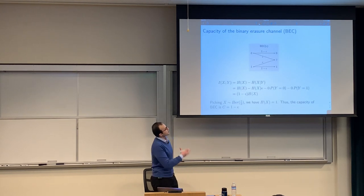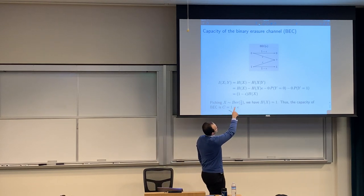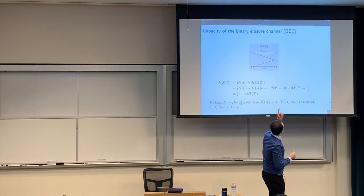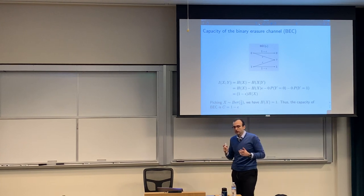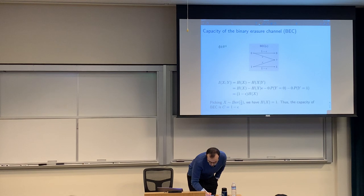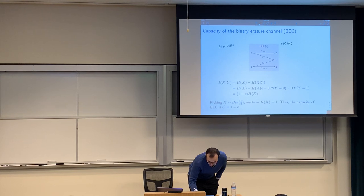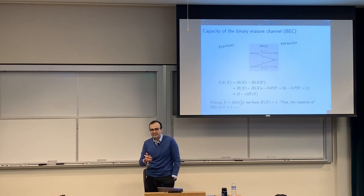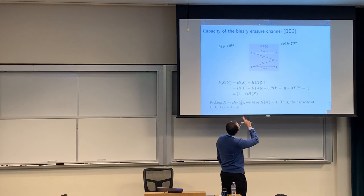One instance of a channel is the binary erasure channel. It's very simple: the input is 0 or 1, but the output has size three — you get 0, 1, or a question mark, in which case the bit is erased. So you transmit a sequence like 0, 1, 1, and what you get is either the exact bit or sometimes a question mark. When you see the question mark, it is certain that the bit is erased — you know it's either 0 or 1, but you don't know which one. Otherwise, you know the exact value.